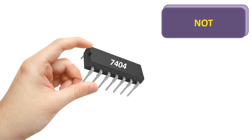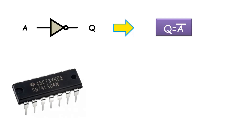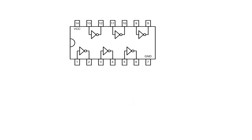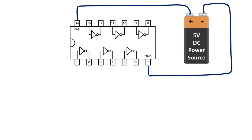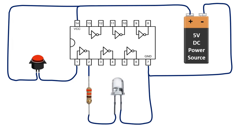Now let's look at the NOT gate. Its symbol is like this, and it consists of one input and one output. In its mathematical expression, the output is not the input — it is represented by a line above A. The 7404 IC is the IC of this logic gate. When we look at its internal structure, we can see that this integration consists of six NOT gates. We should feed the positive and negative supply of the IC with a DC power supply. The first pin of this IC is the input. Let's connect the button to give logic 1 from our 5 volt DC power supply and connect an LED to see the output value.